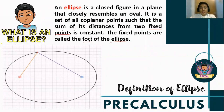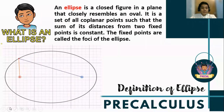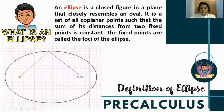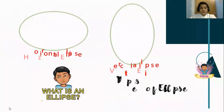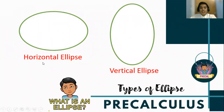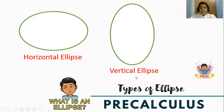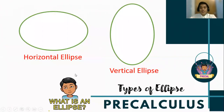Sometimes we refer to the foci as 'foci' — they are the two focuses, but we do not say 'focuses.' It's foci. Now, we have two types of ellipses: the horizontal ellipse and the vertical ellipse. Let us see how the parts of an ellipse change from horizontal to vertical.